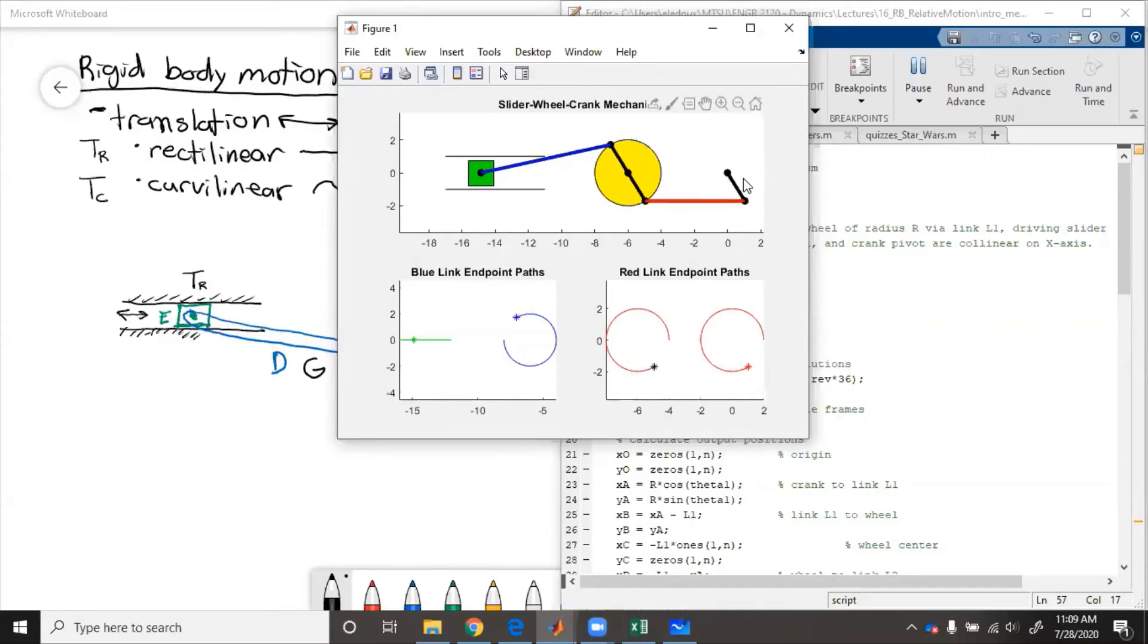So we see the wheel and the crank have fixed axis rotation, then we can see that this curvilinear translation of the red bar, because it's staying horizontal but it's still kind of moving in a circle. Then the slider's got the rectilinear motion, we can see that in the green, and then general planar motion from this blue link, because the left side is sliding but the right side is rotating.